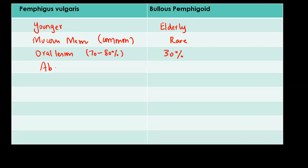In patients with Pemphigus Vulgaris, antibodies are formed against Desmoglein 3. In patients with Bullous Pemphigoid, antibodies are formed against Hemidesmosome.